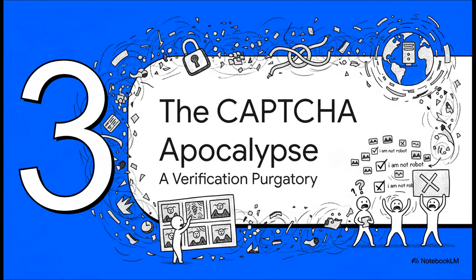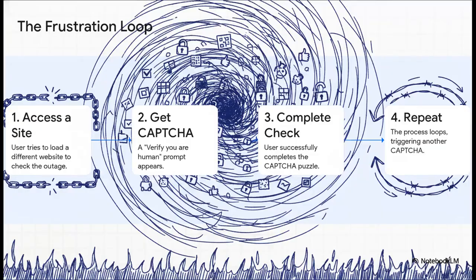But in the middle of all this technical meltdown, there were these moments of pure infuriating absurdity. And the best example has to be what some people started calling the CAPTCHA apocalypse. Just picture this. You're trying to figure out what's going on. So you go to a different website and it hits you with a CAPTCHA. Fine. You click the boxes, you solve the little puzzle and your reward? Another CAPTCHA. You are now stuck in verification purgatory, a digital hell loop created by the very service that was broken.